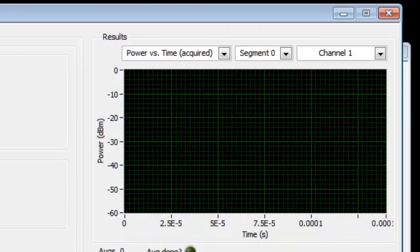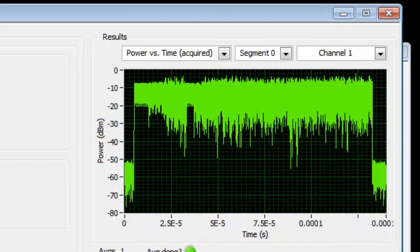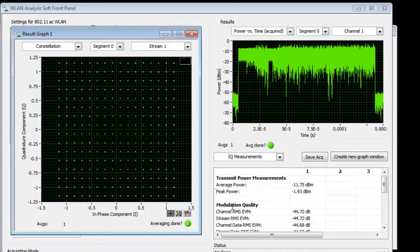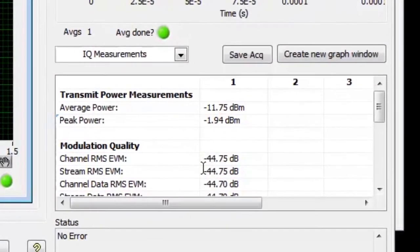If I switch over to the time domain measurements, we can see a power versus time graph as well as a constellation plot showing off the 256-QAM modulation. Here we're seeing an industry-leading EVM measurement of minus 46 dB, which is extremely good.